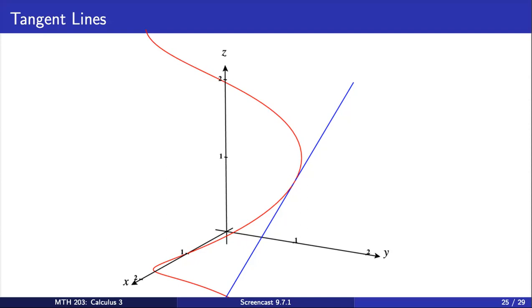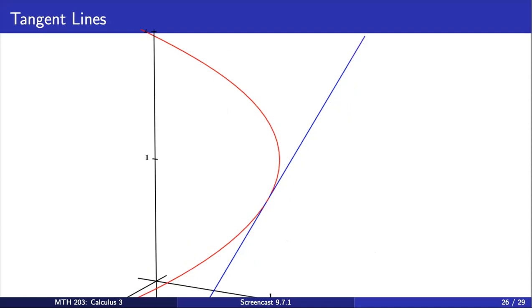Pictured here is a vector-valued function in red and a tangent line to this curve in blue. Indeed, as we zoom in on a particular point, the curve begins to look indistinguishable from its tangent line.